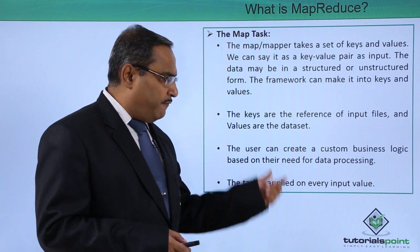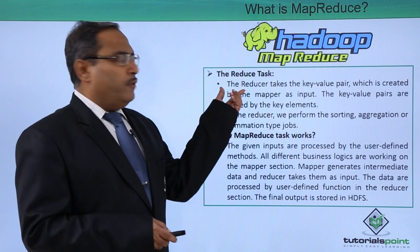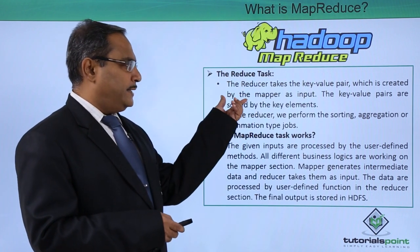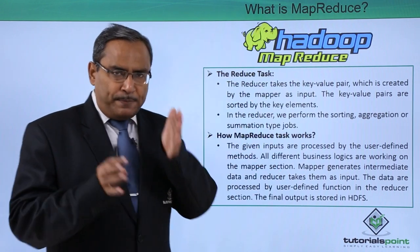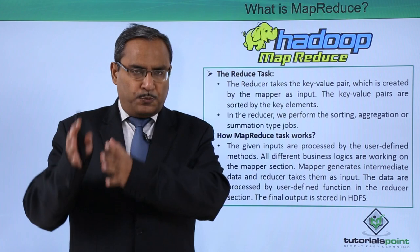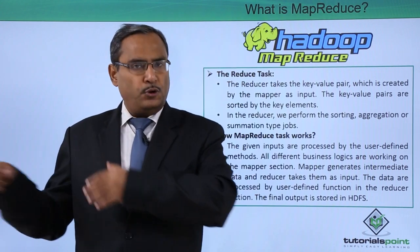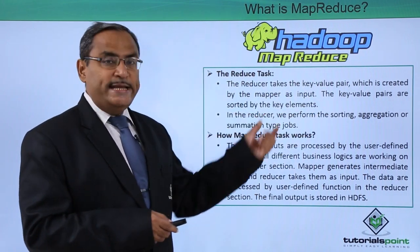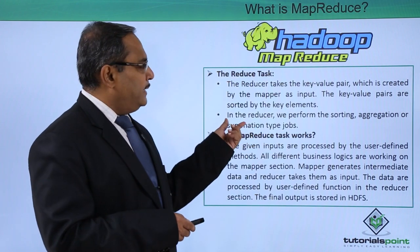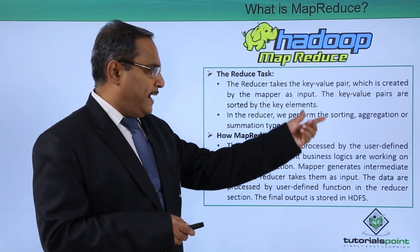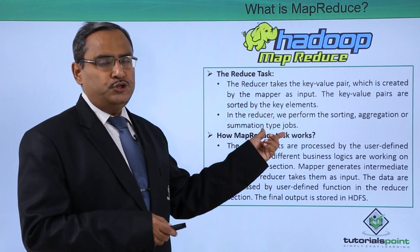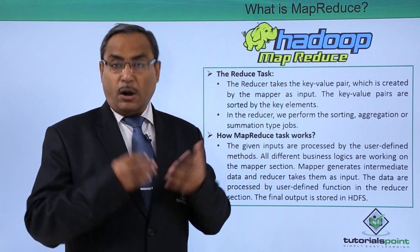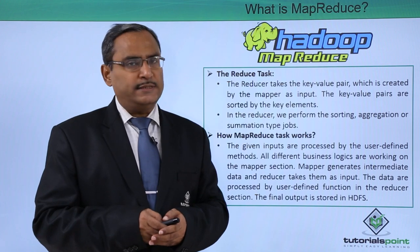The task is applied on every input value. The reducer takes the key-value pair created by the mapper as input. The mapper's output becomes the input to the reducer, which produces the respective output. Key-value pairs are sorted by the key elements in the reducer. In the reducer we perform sorting, aggregation, or summarization — such as summation, counting, or maximum/minimum calculations.